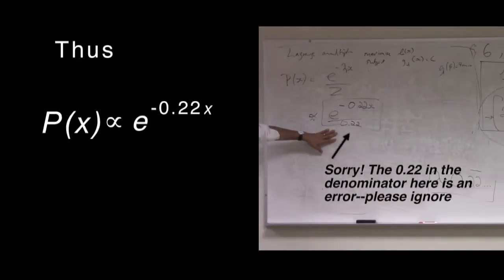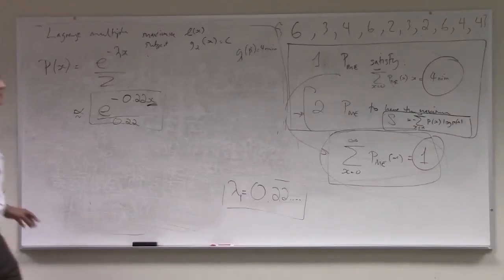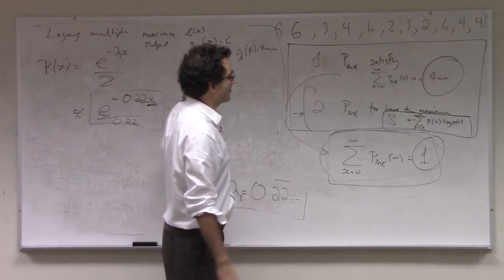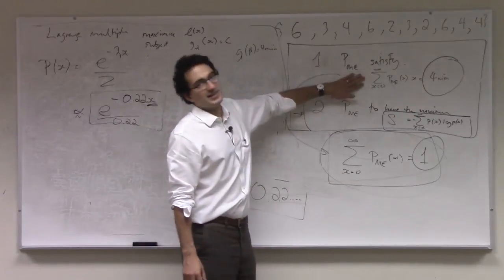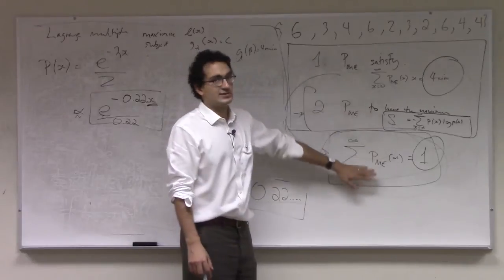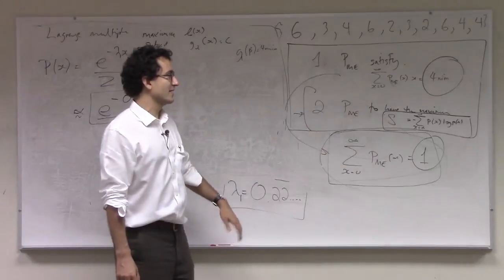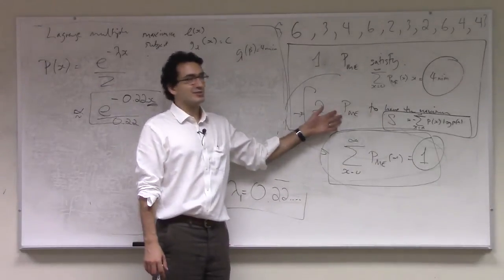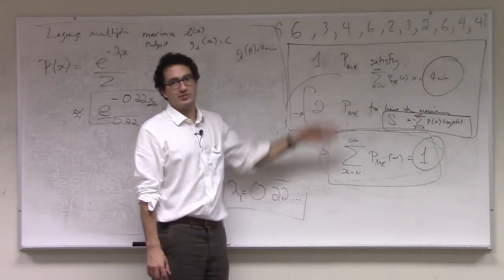will be the exponential distribution, it's an exponential distribution, linear in the waiting time x. And what I've shown to you is this distribution has the following properties. It satisfies this linear constraint, it's normalized, and it has the maximum entropy of all the distributions with those two previous properties.